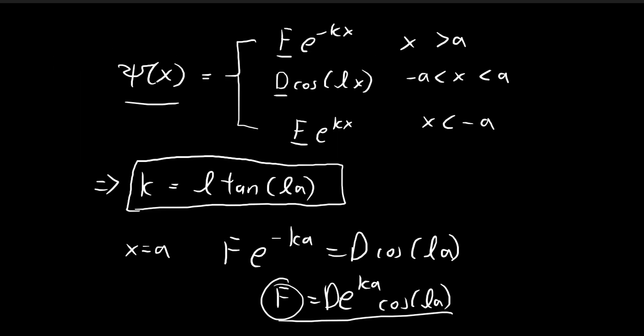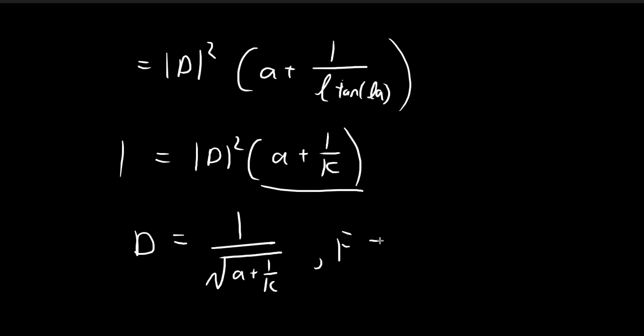And this also implies that because d and f are related by this formula, we found d, so we can just multiply these terms to our d to get df. And so that means f is equal to e to the power of k a cosine l a divided by the square root of a plus 1 over k.